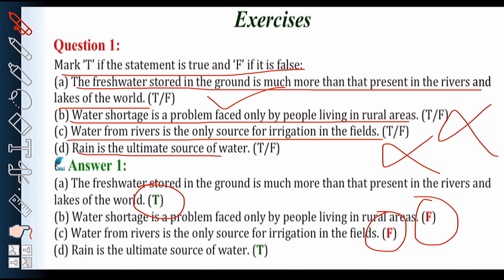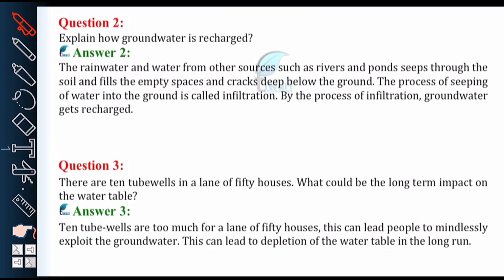Last one: rain is the ultimate source of water. The ultimate source of water is rain. The given statement is absolutely correct.